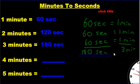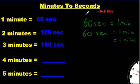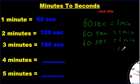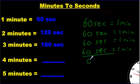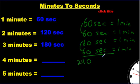Now for four minutes — every single minute is going to be another 60 seconds. If you add four 60s together: six and six makes 12, these two make 12, and 12 and 12 is 24. So you get 240 seconds equals four minutes.